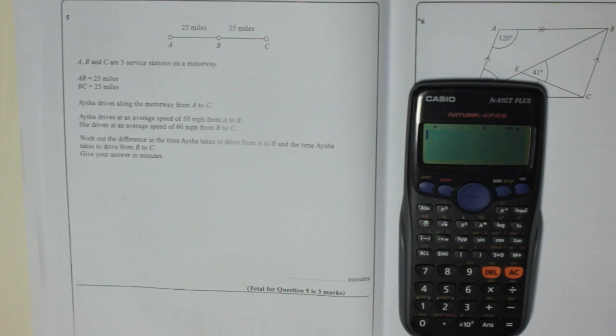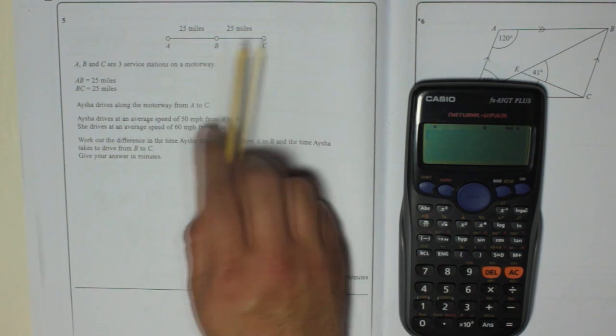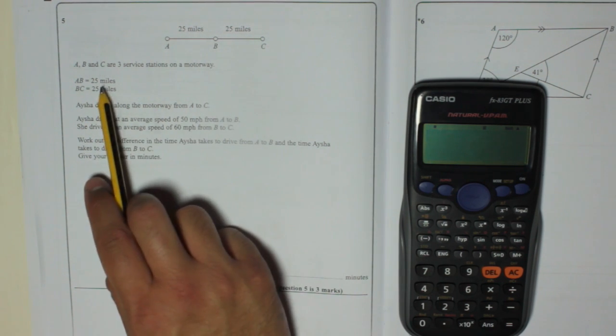Question 5: A, B and C are three service stations on a motorway. A and B are 25 miles apart, and B and C are also 25 miles apart. That's what it says there.